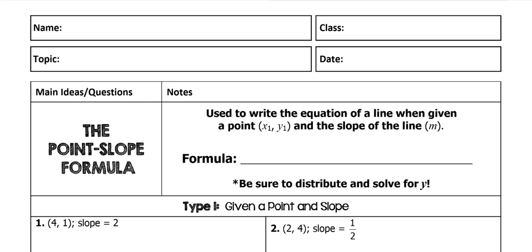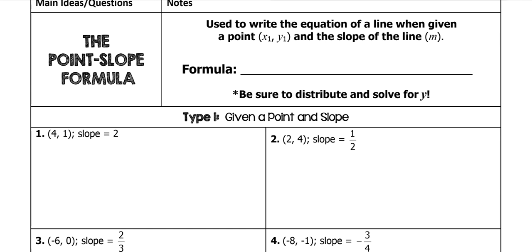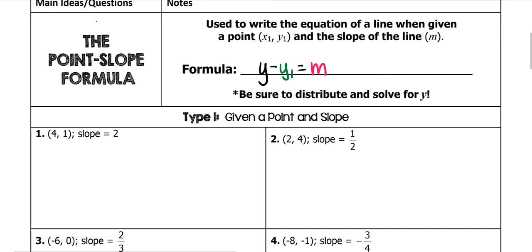Today we're going to go over equations again, but this time it's specifically point-slope formula. So that looks like this: Y minus Y1 is equal to the slope times X minus X1. We have Y1, X1, and our slope.